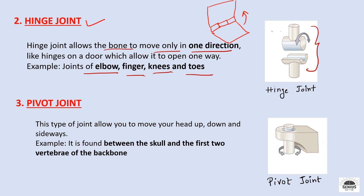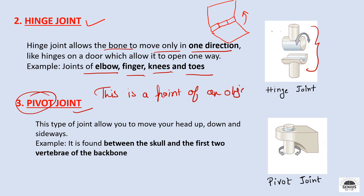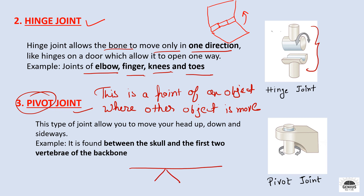The third type of joint is the pivot joint. Pivot means a fixed point around which another object moves. Like a seesaw has a fixed central point and both sides move on it, in a pivot joint there is a fixed point and the bone moves around it. This type of joint is present between the skull and the first two vertebrae of the backbone, and it allows us to move our head up, down, and sideways.